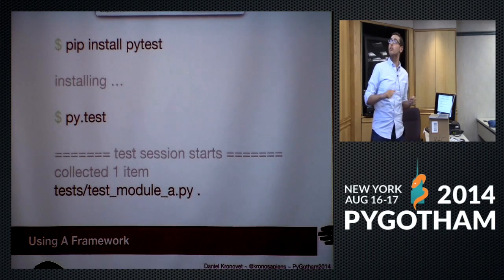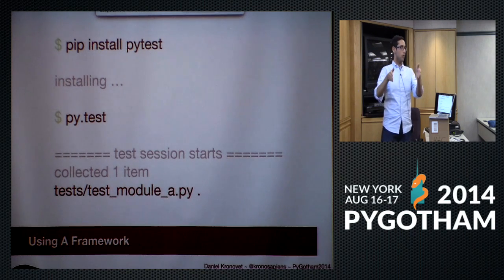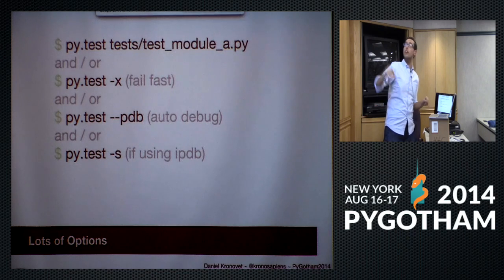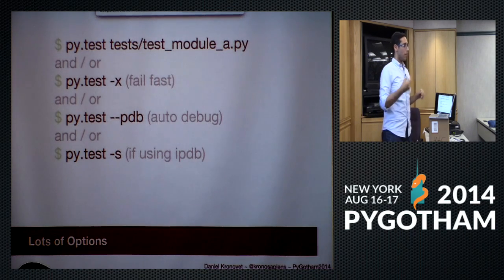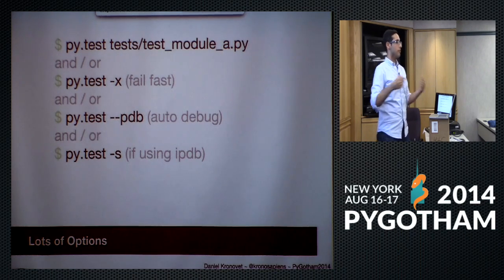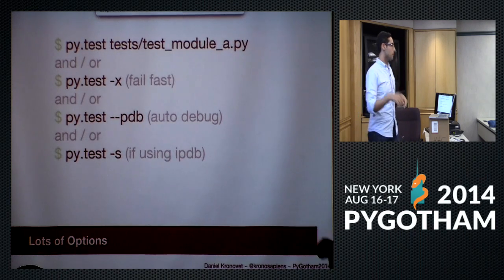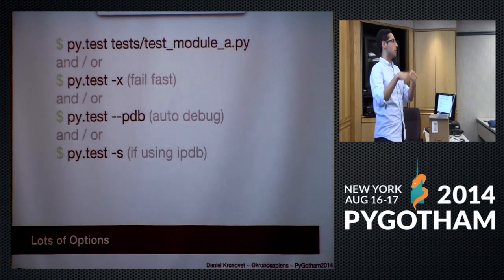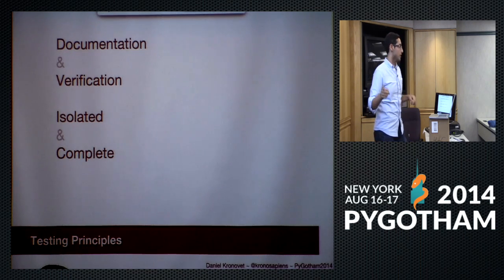There are several ways to use pytest. You can run it directly and it'll find all test files looking downward from where you are — any file starting with `test_`. You can specify a specific test module. The `-x` flag stops after the first failure, known as fail fast, which is useful for developing one test at a time. `--pdb` automatically throws you into the debugger on an exception. And `-s` is needed if you're using IPDB, since pytest suppresses standard output by default.